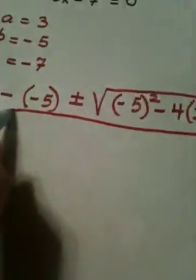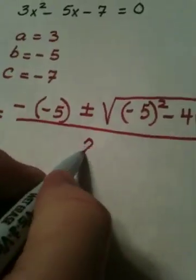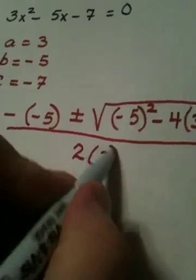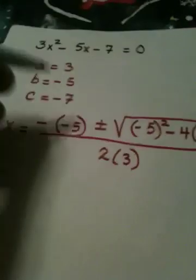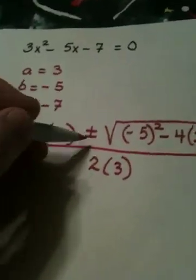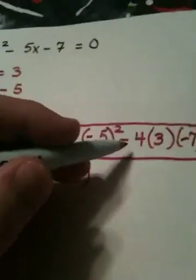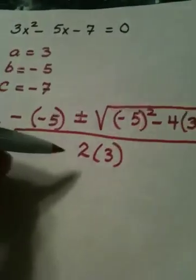And this is the bar. And then all over 2 times a. So, I basically take my formula and I plug into it. Opposite of b plus or minus the square root of b squared minus 4ac all over 2a.